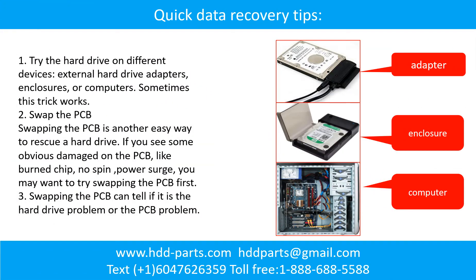There are some simple ways to recover data from a hard drive. One of them is to try reading the hard drive with different devices, like different external hard drive adapters, computers, or enclosures, because different devices use different ways to read a hard drive and sometimes this trick works. Another way is swapping the hard drive PCB board, which can fix problems caused by the PCB board. There is a cost in swapping the PCB board, but it is way cheaper than sending the hard drive to a data recovery firm.